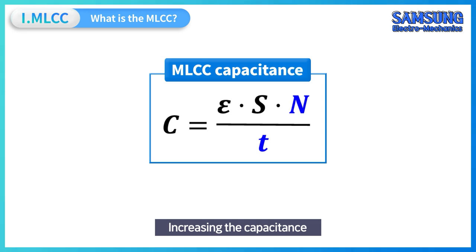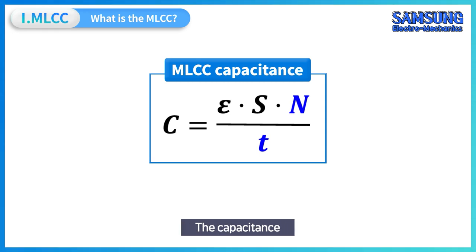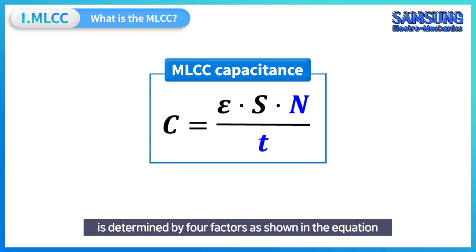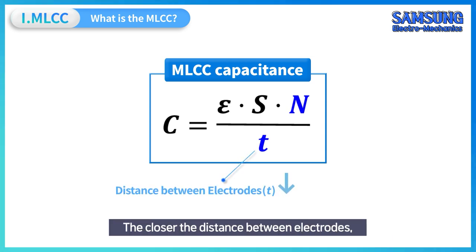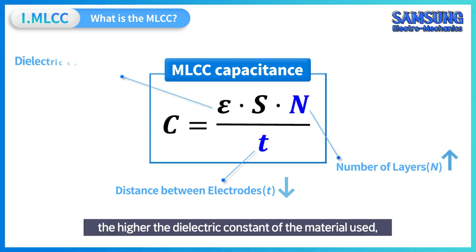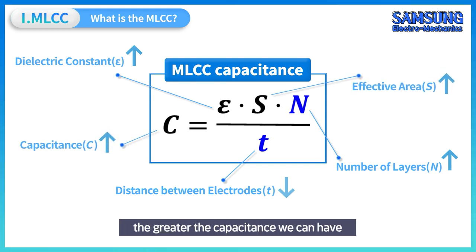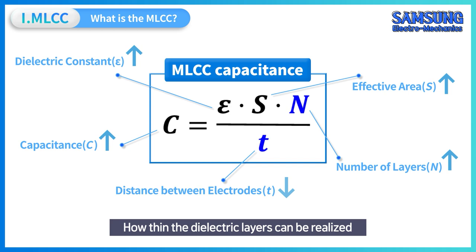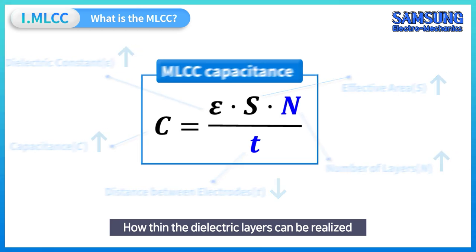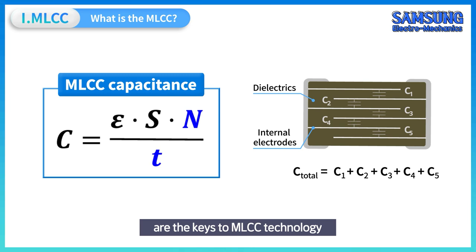Increasing the capacitance is the main direction of MLCC technology development. Capacitance is determined by four factors: the closer the distance between electrodes, the more layers are stacked, the higher the dielectric constant of the material used, and the larger the effective area, the greater the capacitance. How thin the dielectric layers can be realized, and how high they can be stacked, are the keys to MLCC technology.